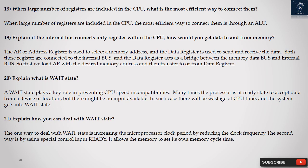Question 20: Explain what is wait state? A wait state plays a key role in preventing CPU speed incompatibilities. Many times the processor is at ready state to accept data from a device or location, but there might be no input available. In such case there will be wastage of CPU time, and the system gets into wait state.